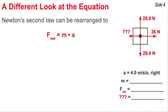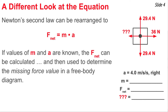The Newton's second law equation can be rearranged to F_net = mA. This equation tells us that if we know the values of m and a, we can calculate the net force value. And if we know the net force value, we should be able to find the missing force value in any free body diagram, like the free body diagram we see here.